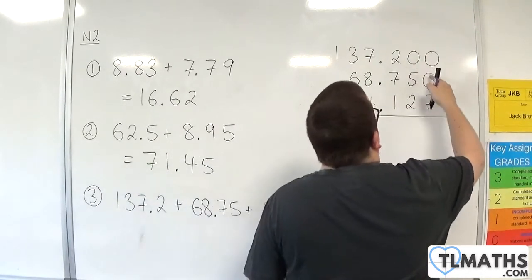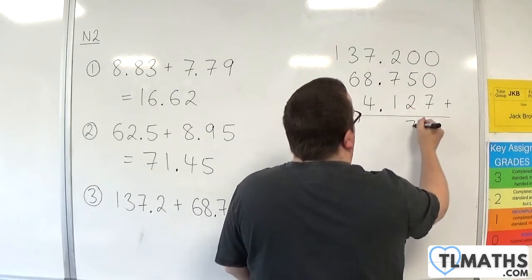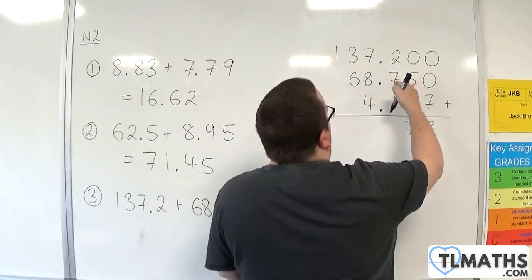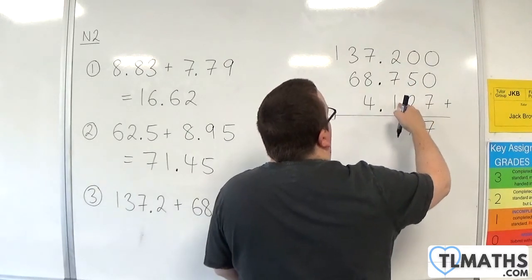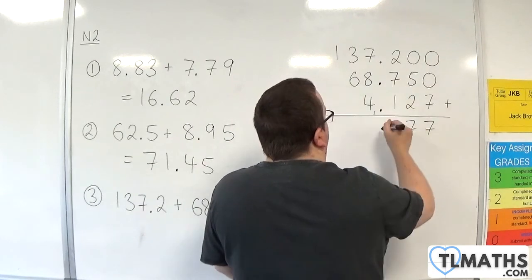So, we've got 0 plus 0 plus 7, which is 7. 0 plus 5 plus 2, which is 7. 2 plus 7 plus 1 is 10. So, put the 0, carry the 1. Bring the decimal point down.